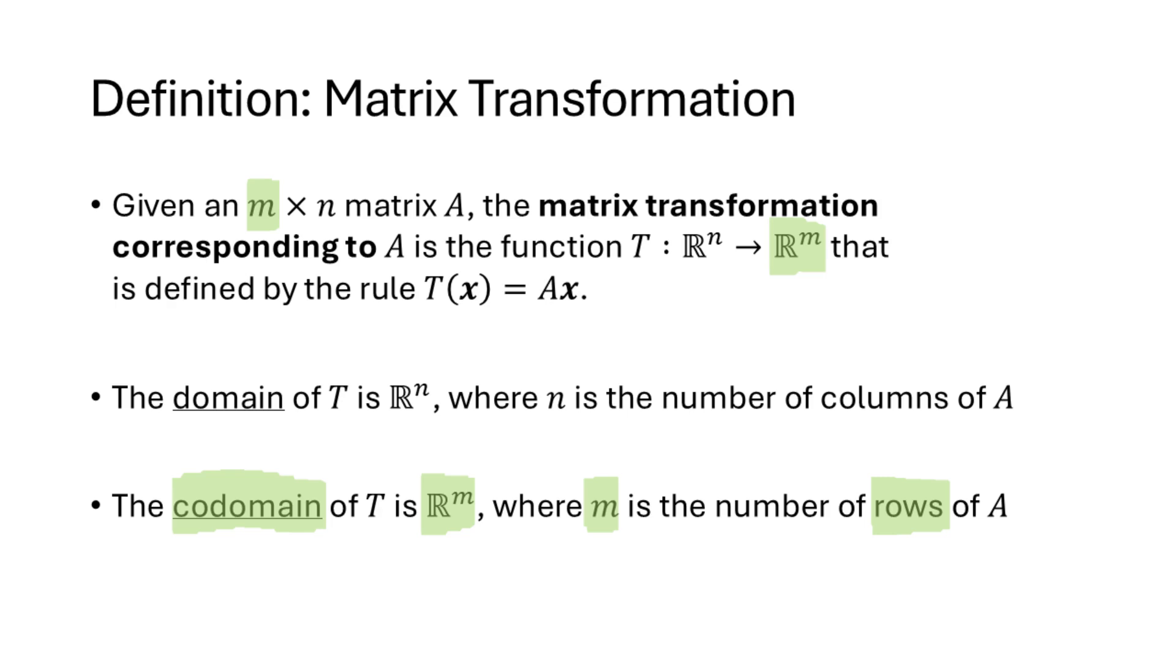Now the codomain of this function, the set of things that we can get out of this function, is Rm. And this is because when we multiply A times a vector x, what we get is a linear combination of the columns of A. A has m rows, so the columns of A have m entries, and so any linear combination of those columns would also have m entries, and that's why the codomain of this function is Rm.